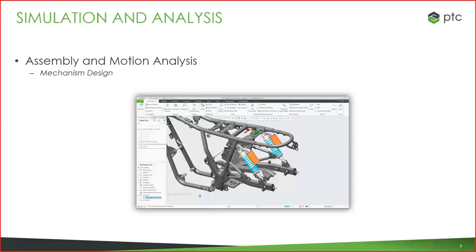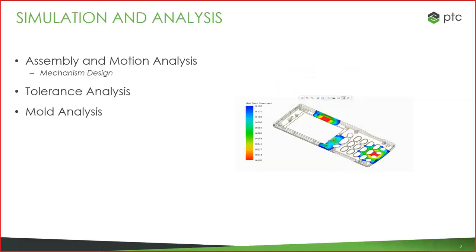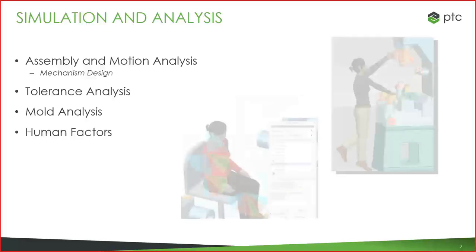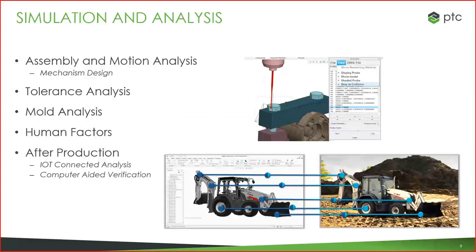Other forms of analysis include assembly and motion analysis for mechanisms — so if anywhere in your design you have a moving mechanism, you can get insight into how it works and the forces generated from that motion, building out a virtual prototype right in Creo. Tolerance analysis is available for stack-ups in assemblies to see which tolerances might be causing issues. Mold analysis is hugely important for plastic injection molded parts. You can even do human factor analysis to look at ergonomics. And even after production, you can bring in real test data from the field or use computer-aided verification to compare real-world dimensions to your Creo design.